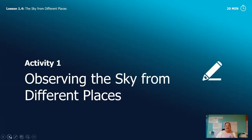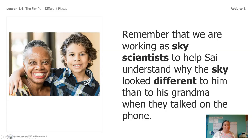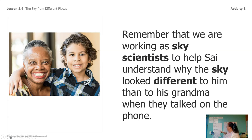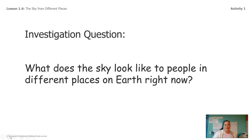Today we're going to learn how to observe the sky from different places, and I'm really excited about this lesson because I'm going to get you started on something and hopefully you'll be able to do more of it on your own. So remember that we're working as sky scientists and we want to help Sai understand why the sky looked different to him than his grandma when they talked on the phone. Today we're answering a smaller part of that question: what does the sky look like to people in different places on Earth right now?